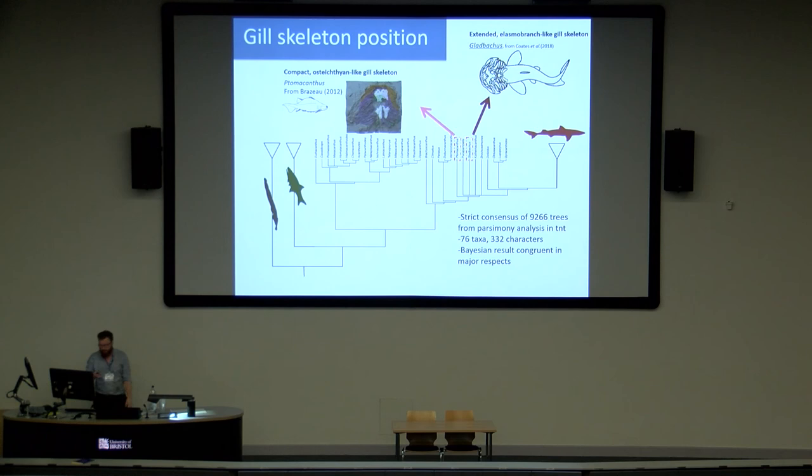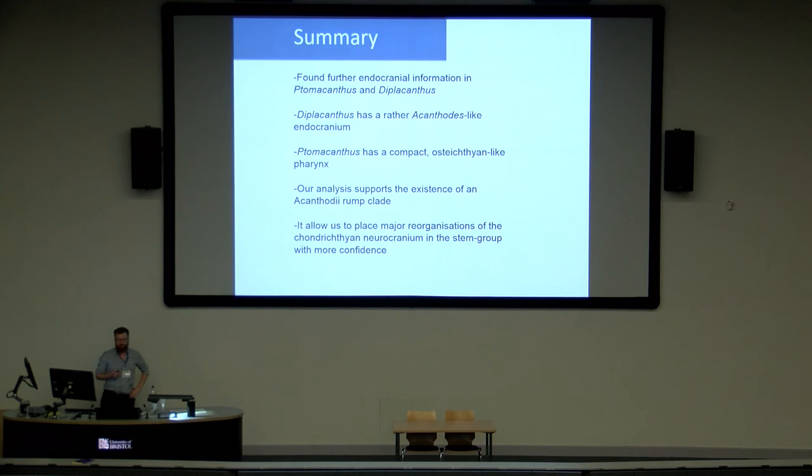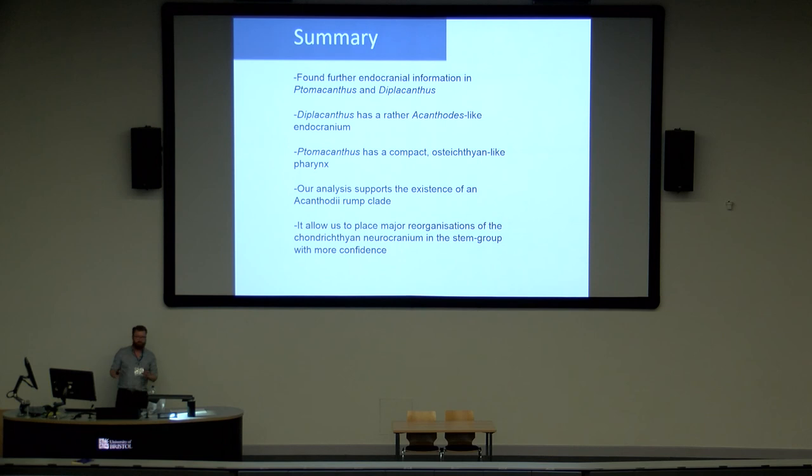To summarise: we found further endoskeletal information in Tomacanthus and Diplocanthus. Diplocanthus looks quite Acanthodes-like in many respects but with a compact gill skeleton. Tomacanthus has a compact osteichthyan-like gill skeleton. All this information supports the acanthodii rump clade, and we can start to constrain some of the major endoskeletal changes that separate chondrichthyans from osteichthyans on the chondrichthyan stem group.